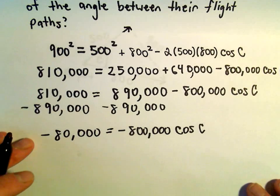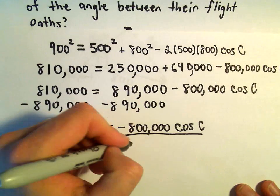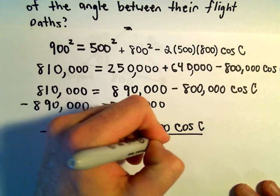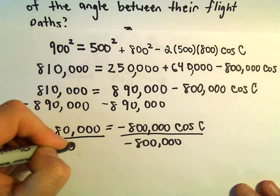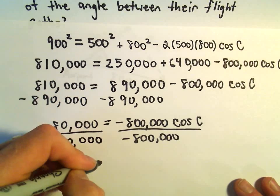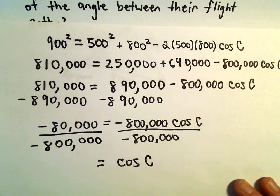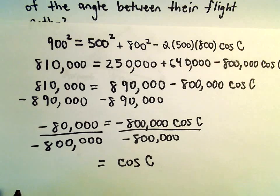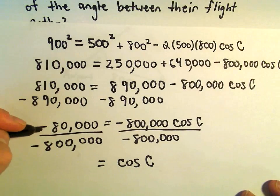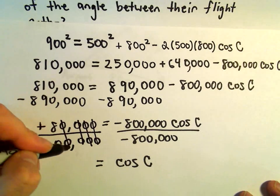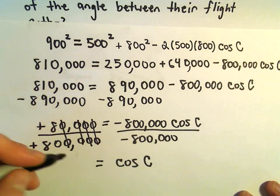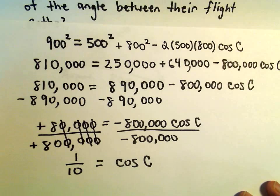And at this point we can simply divide both sides by the negative 800,000. On the right we'll just be left with cosine of C. On the left, well, two negatives make a positive, we can cancel out our zeros. 8 over 80 is just going to be 1 tenth.